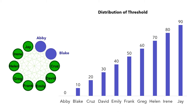Since Abbey has already adopted the idea (10% of 10 people), Blake then adopts it. Next, Cruz has a threshold of 20%, requiring at least 20% to adopt before him — Abbey and Blake already have, so Cruz adopts. David has a threshold of 30%, requiring at least 30% to adopt before him — Abbey, Blake, and Cruz have already adopted, so David adopts as well.